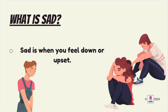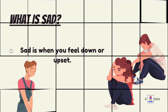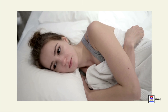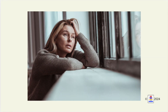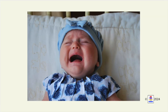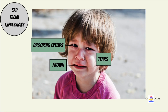What is sad? Sad is when you feel down or upset. Let's look at some examples of sad faces. You can usually tell if someone is sad if they have drooping eyelids, a frown, or maybe tears.